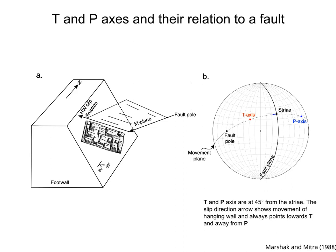Also, on the movement plane and 45 degrees from the striae, in a direction opposite to the slip direction, we plot an axis called the P-axis. The T and P-axes are nothing but the axes of the infinitesimal strain ellipse. T is parallel to the infinitesimal maximum extension, and P is parallel to the infinitesimal maximum shortening.